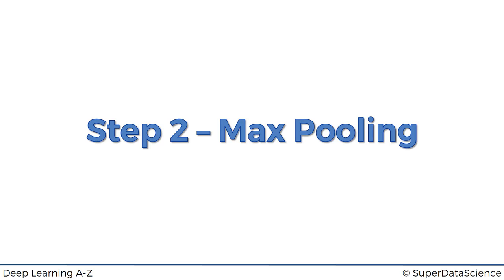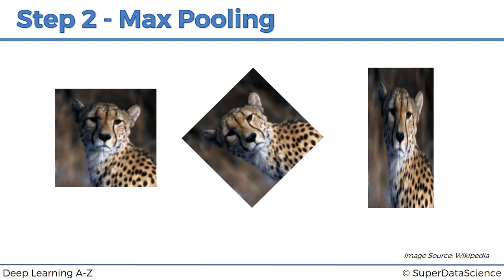The first question is what is pooling and why do we need it? Well to answer that question let's have a look at these images. On these three images we've got a cheetah. In fact it is the same exact cheetah. On the first image the cheetah is positioned properly and looking straight at you. On the second image it's a bit rotated and the third image is a bit squashed. The thing here is that we want the neural network to be able to recognize the cheetah in every single one of these images.